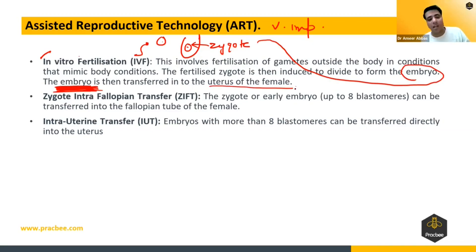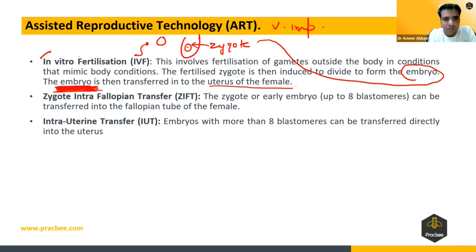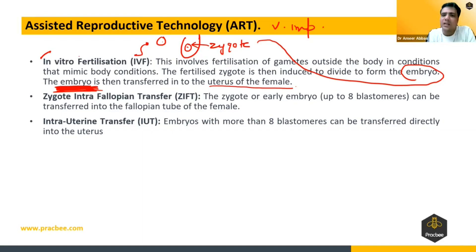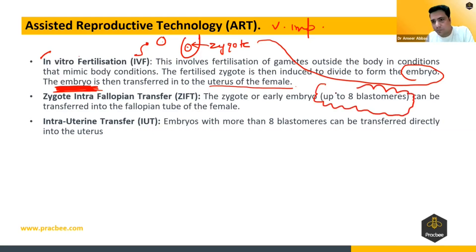The embryo is then transferred to the uterus of the female. The embryo cannot be transferred to other parts like the fallopian tube, so it must be transferred to the uterus. In Zygote Intra Fallopian Transfer, when fertilization occurs outside and a zygote is formed, it is transferred to the fallopian tube. The important point is that the zygote must not be more than eight blastomeres.